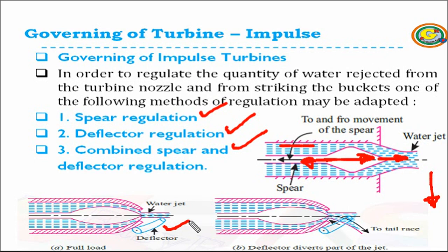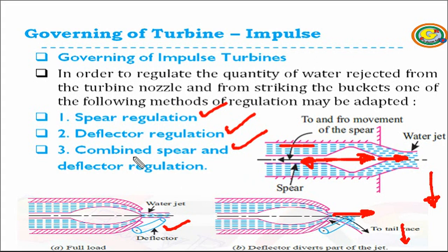In case of deflector regulation, we overcome the water hammer effect by deflecting the jet of water. Without reducing the area of cross-section, we deflect part of the jet of water coming out from the nozzle before it strikes the blade. Whenever load on the turbine decreases, the deflector comes into the path of the jet and deflects part of it, reducing the amount of water striking the turbine. In combined spear and deflector regulation, both the deflector and the spear are used together.